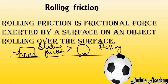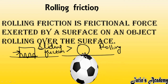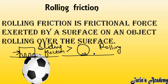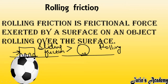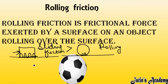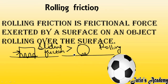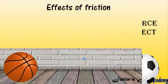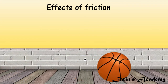In rolling friction, only some part of the object is in contact with the surface, so interlocking is less. It is therefore easier to roll any object on a surface than to slide it. Rolling something is easier as compared to sliding friction.